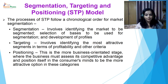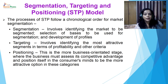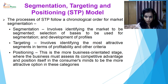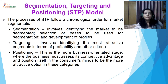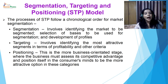As the name STP indicates — Segmenting, Targeting and Positioning — these are the three steps of the STP model. First is segmentation. The market comprises a whole lot of people but the market may be heterogeneous, and your budget may be a constraint so you cannot cater to each and every individual. It is better to identify the market to which you can cater with your best effort. You have to divide the whole heterogeneous market into smaller groups which may be homogenous in certain respects. Segmentation comprises identifying the market to be segmented, selection of basis to be used for segmentation, and development of profiles.